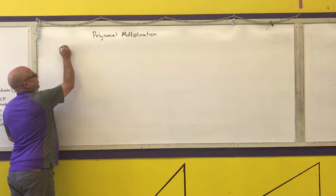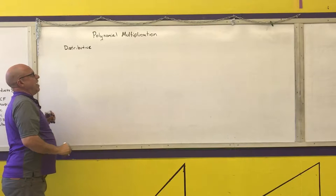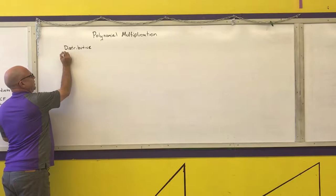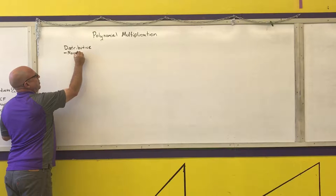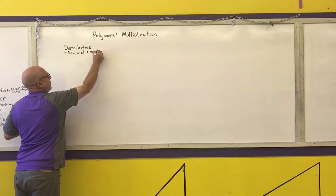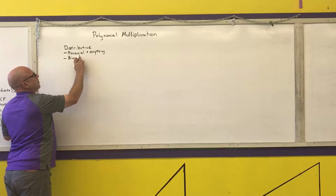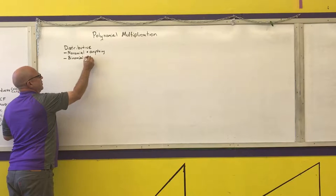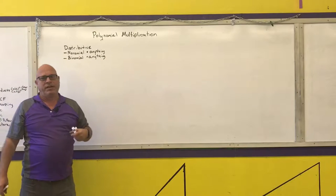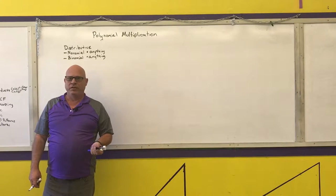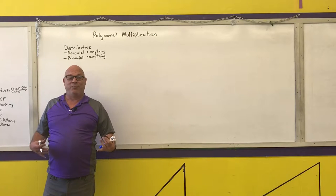The first method I'm going to show you is the distributive method. I will let you use the distributive method in the following cases: a monomial times anything, or a binomial times anything. Those are the only two cases. So if you have a trinomial times a trinomial, I don't want you using distribution — it becomes very messy. I'll show you why it gets really messy.